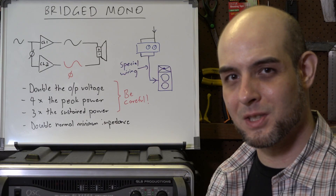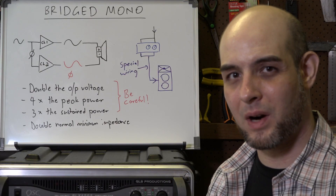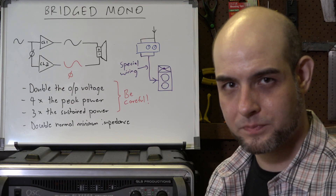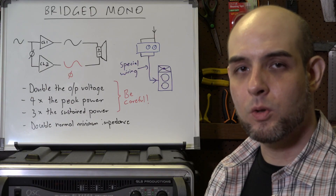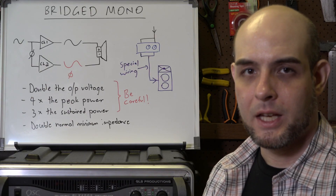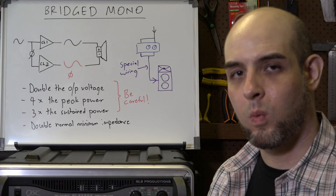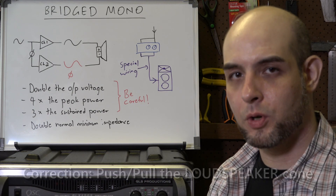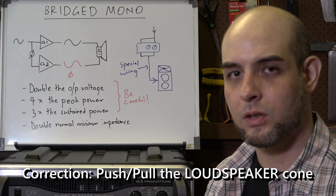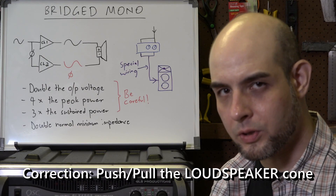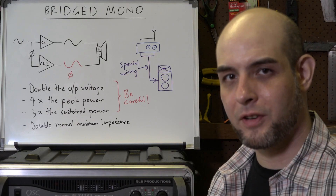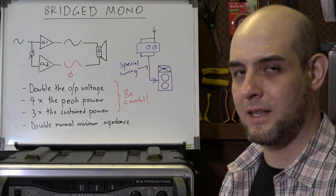When you present a negative voltage to the input, it moves the cone backwards. On JBLs this was the other way around for a long time, but they've since come into line with other manufacturers. When you bridge an amplifier, you are using channel one to push the loudspeaker cone and channel two to pull the loudspeaker cone.